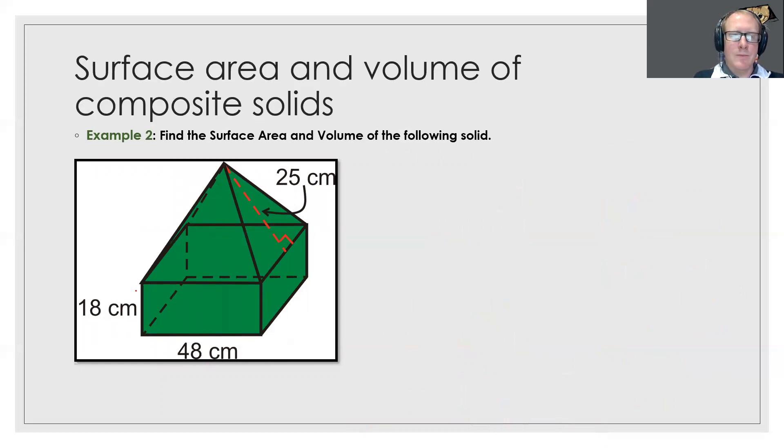So surface area. Again we're going to do surface area of this shape and then we're going to do the surface area of this pyramid. Now we're going to make an assumption here that this is 48 centimeters here because it wasn't labeled. So 48 centimeters.